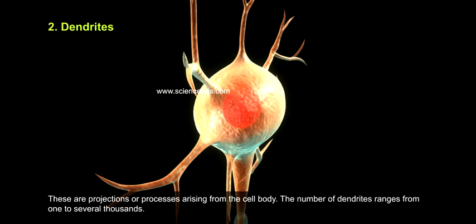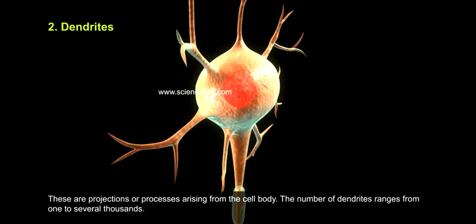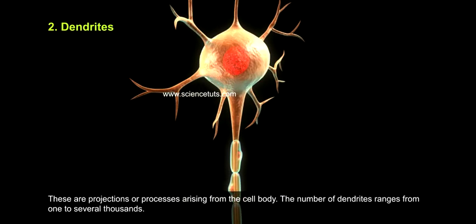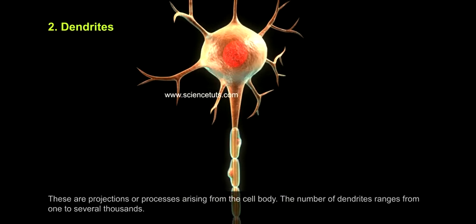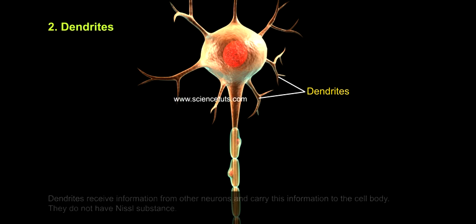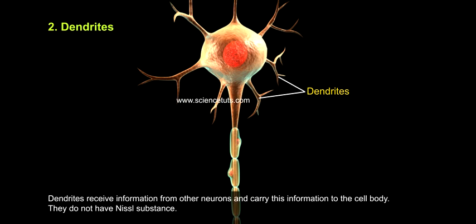The second part is dendrites. These are projections or processes arising from the cell body. The number of dendrites ranges from one to several thousands. Dendrites are short and branched structures, arranged in the form of a tree with branches. Dendrites receive information from other neurons and carry this information to the cell body.